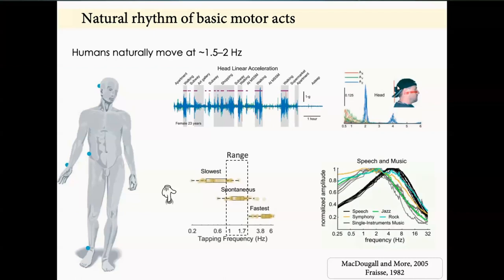When people produce music — before computers — we produced music with our movements. So naturally, the beat of music is also around two hertz, 120 BPM.